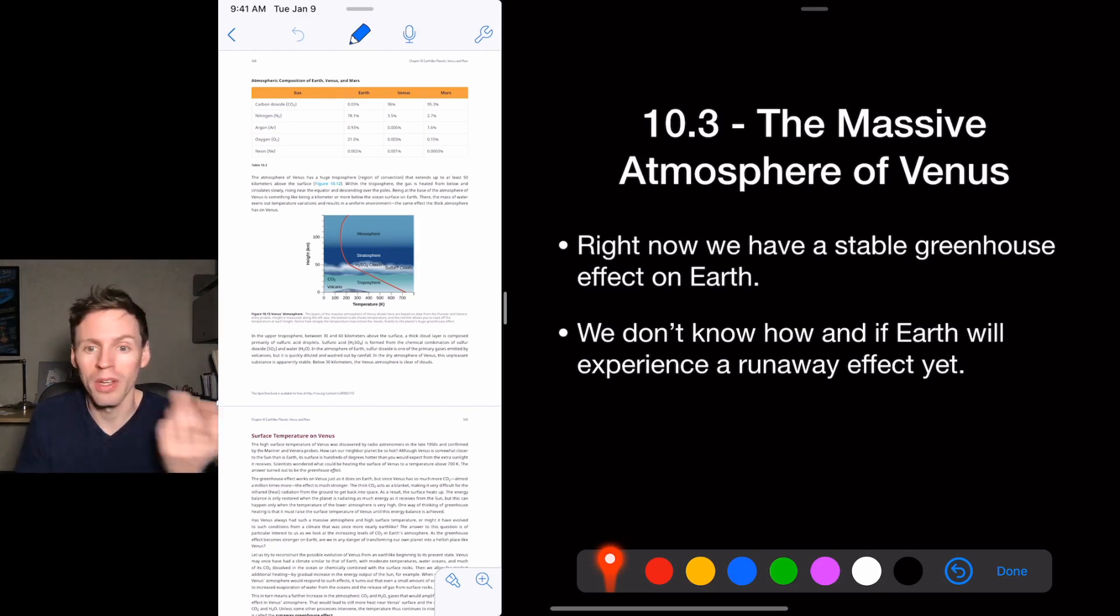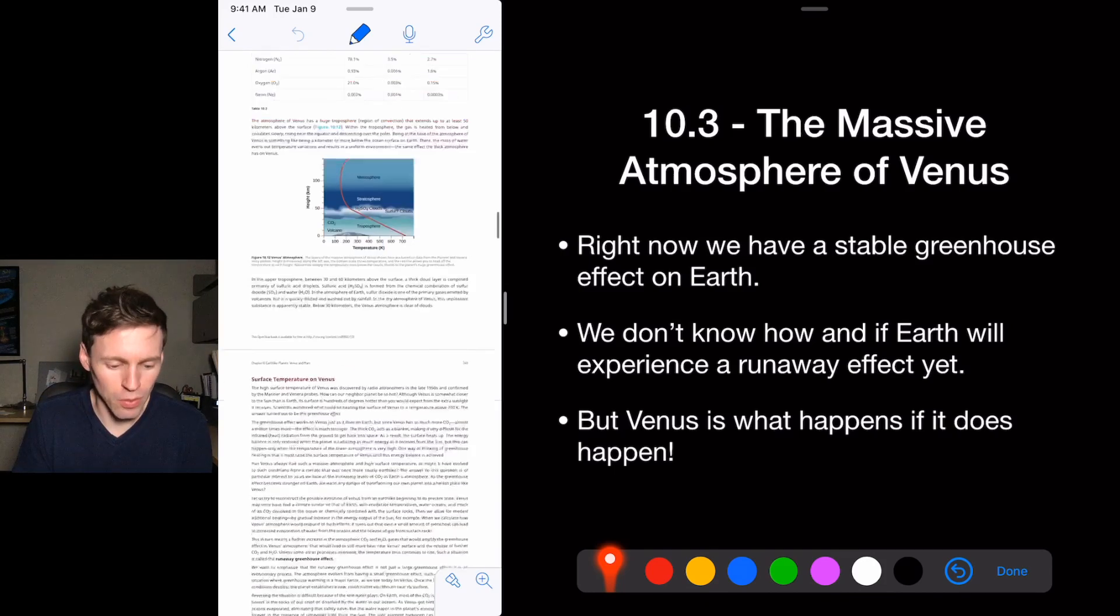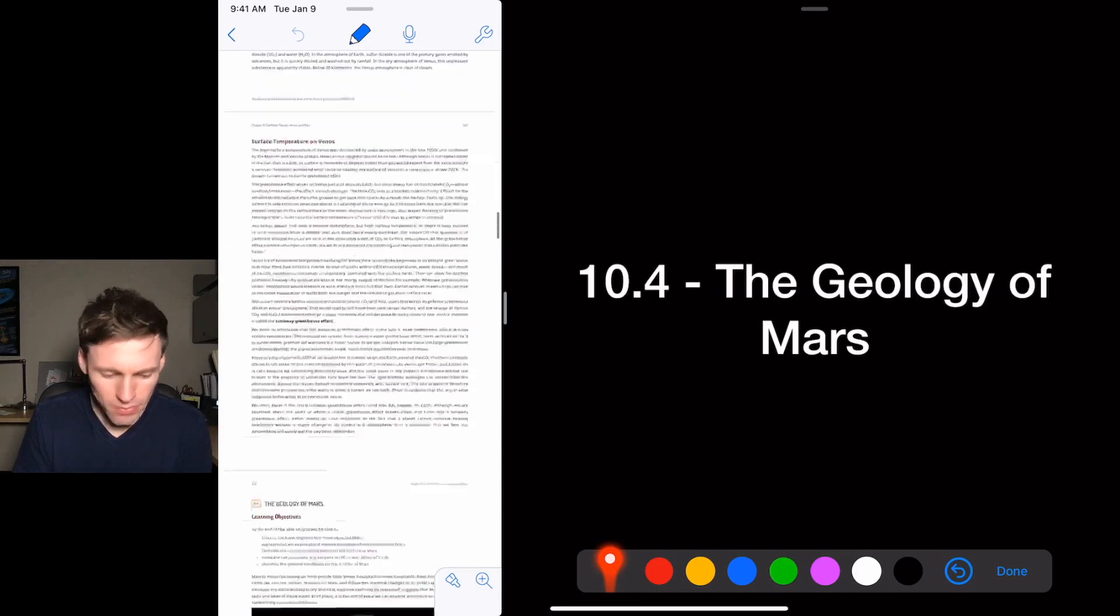We don't know if or when earth will experience that naturally, but we can kind of give it an encouragement. But if it does happen here on earth, then Venus is an example of what is possible.